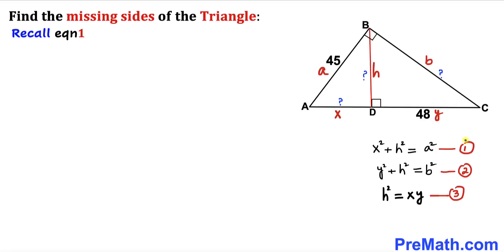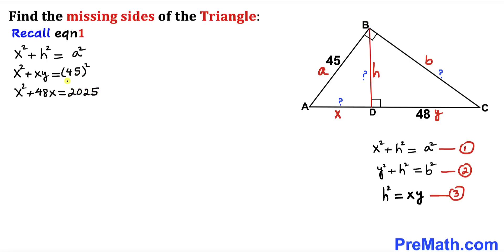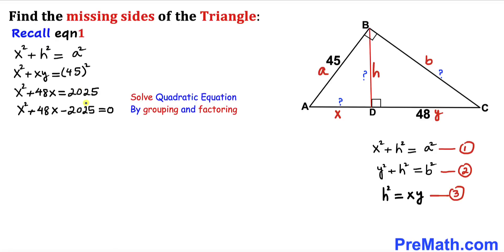Recalling equation 1 — X² + H² = a² — we replace H² with XY (from equation 3), and a with 45. This gives X² + XY = 45², which is X² + 48X = 2025 (since Y = 48). Moving 2025 to the left gives us a quadratic equation, which we'll solve by grouping and factoring.